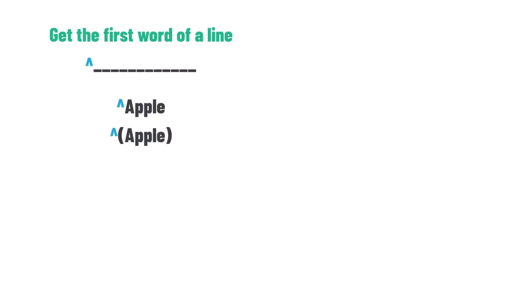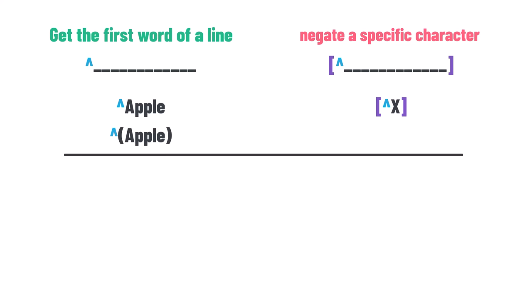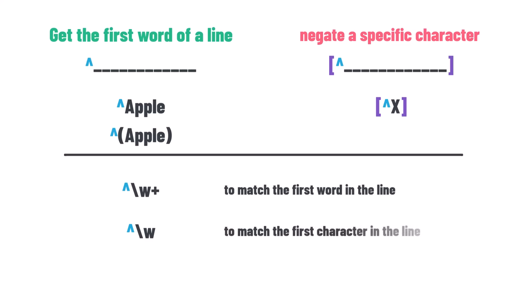In summary, to get the first word of a line you can use caret with the word you are searching for, either with or without brackets. But if you want to negate a specific character or group, you have to use caret inside square brackets. You can use caret not only with words or characters, but also with other patterns we discussed in the video.